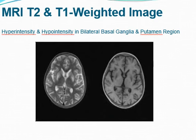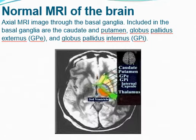Slit lamp examination of the eye revealed bilateral KF rings with normal visual acuity. This MRI of the child shows hyperintensity and hypointensity in bilateral basal ganglia and putamen region. This is compared with a normal MRI of the brain in patients with Wilson's disease.